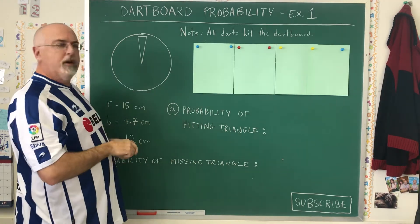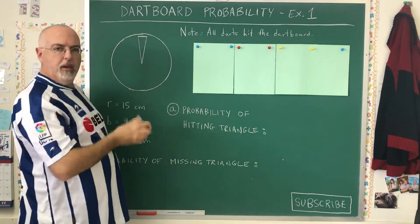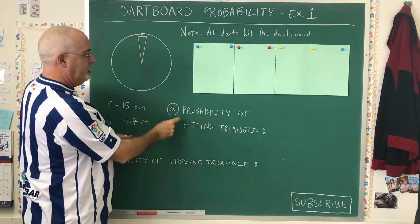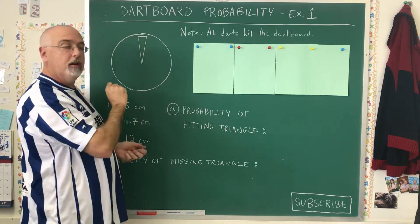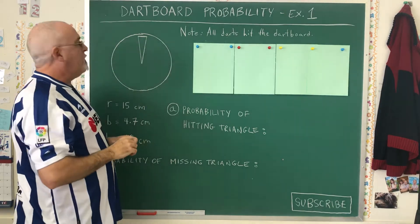In order to make the calculation, we're comparing the area we want the dart to land in—which in this case of question A is inside the triangle—with the area of the whole dartboard.